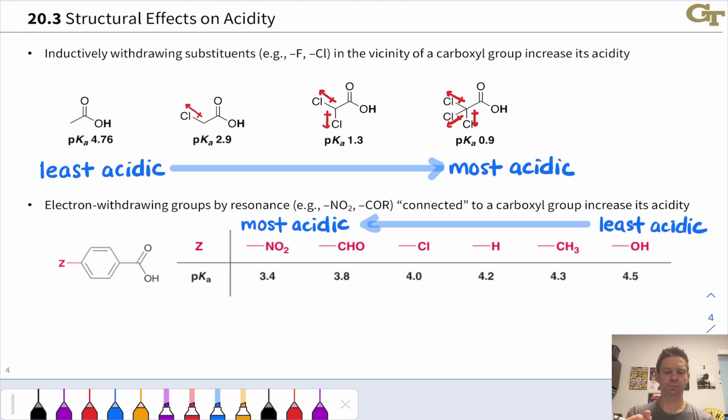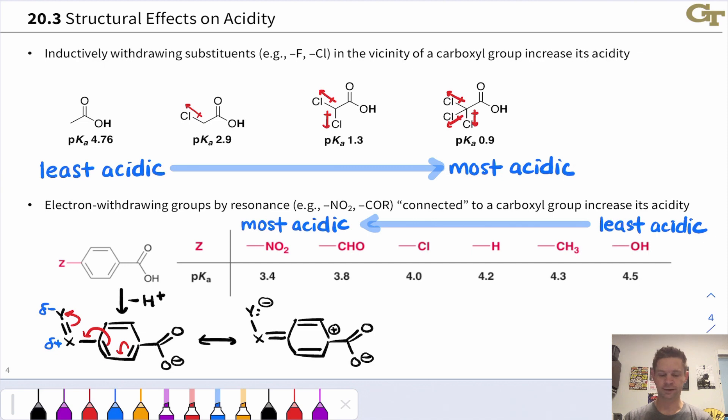In the case of a resonance electron withdrawing group, we can think about resonance structures that place positive charge in the vicinity of the negatively charged carboxylate group. This is what leads to the enhanced acidity of carboxylic acids with these para-electron withdrawing groups.